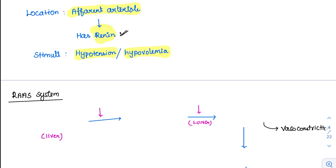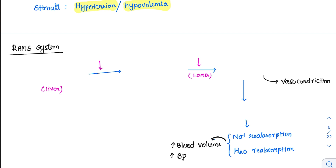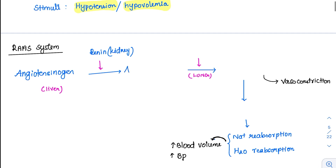If there is hypovolemia, it is sensed by the juxtaglomerular apparatus and they will produce renin. The renin is produced from the kidney and it helps in converting angiotensinogen — which is the primary form available from the liver — to angiotensin 1.